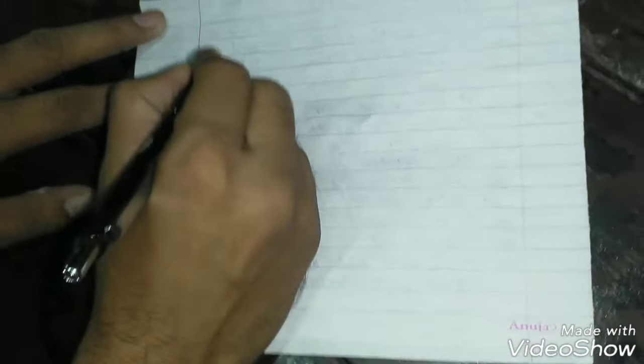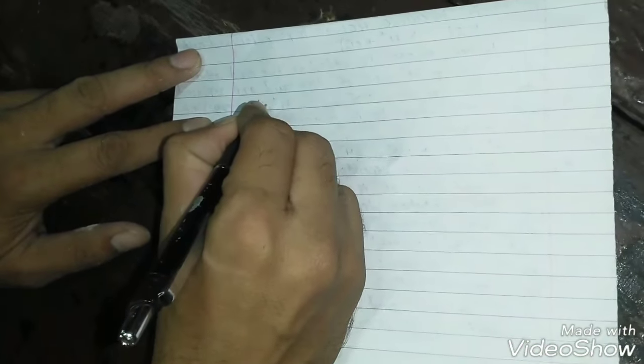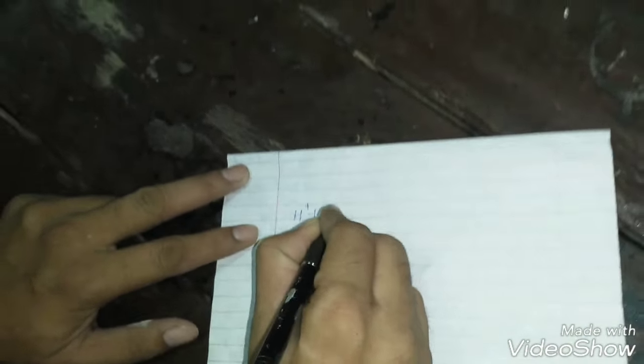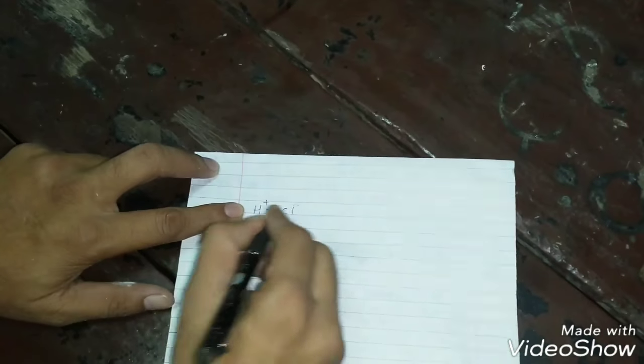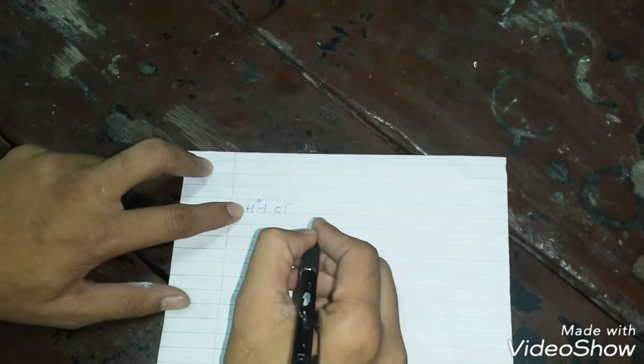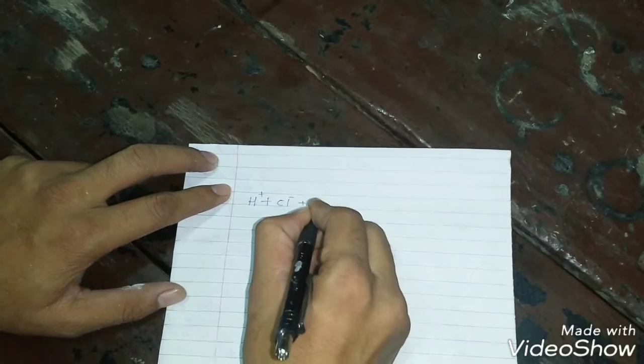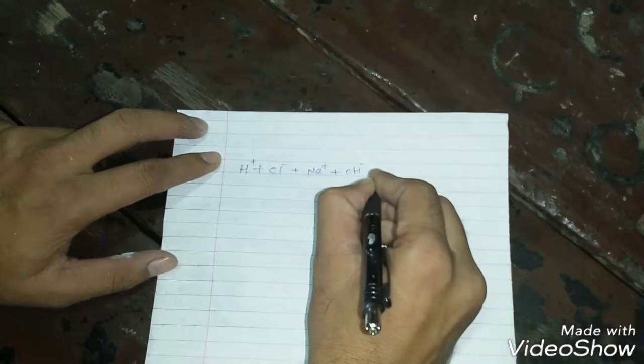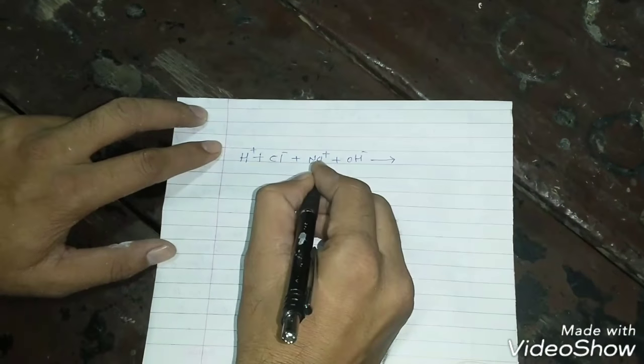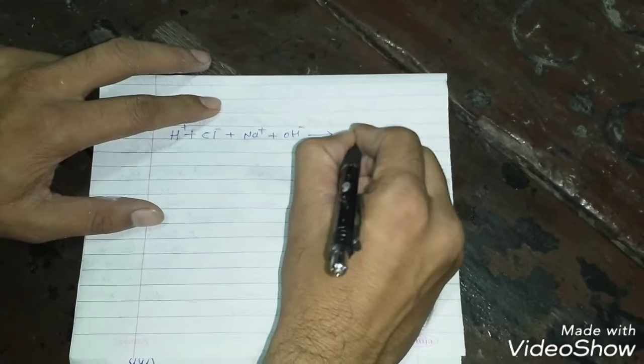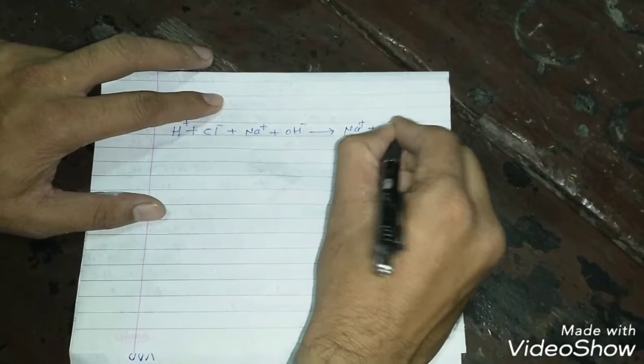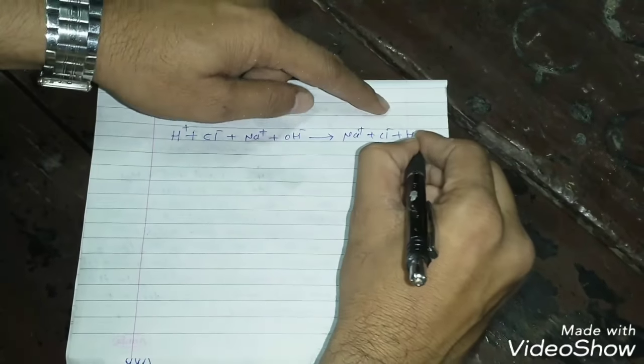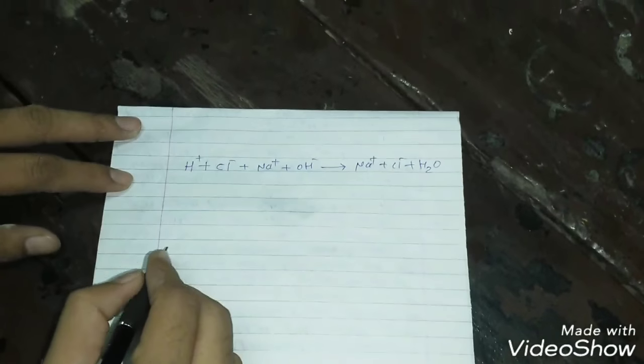During neutralization reaction, when we add NaOH to HCl solution, the reaction taking place is like this. As HCl is completely ionized, it forms H+ and Cl- ions and in the presence of NaOH, it reacts like this. Na+ plus Cl- and this H+ combined with OH- to form feebly ionized H2O.